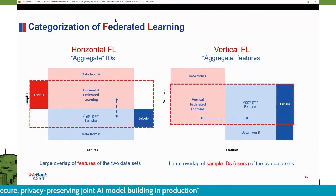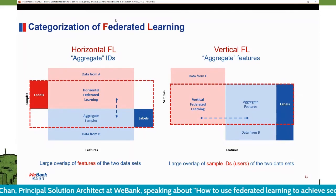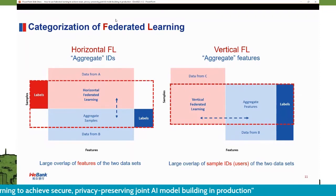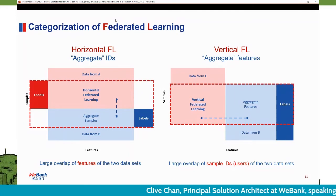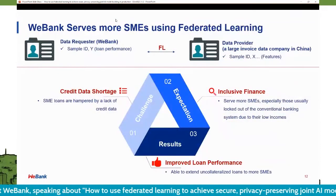There are two categories of federated learning: horizontal and vertical. Most of our production use cases at WeBank use vertical federated learning. For example, WeBank has our own credit score and transaction history of a customer, but we don't have their payment history or consumption habits outside our organization. So we acquire additional features from external data sources to improve model training for risk scoring and credit rating — for customers applying for personal loans or SME loans.